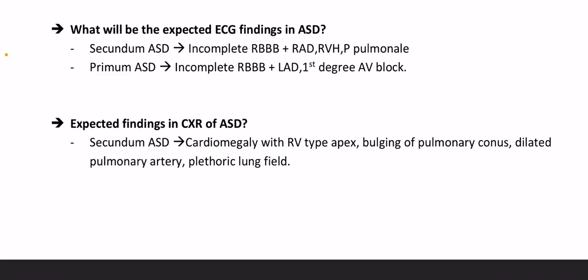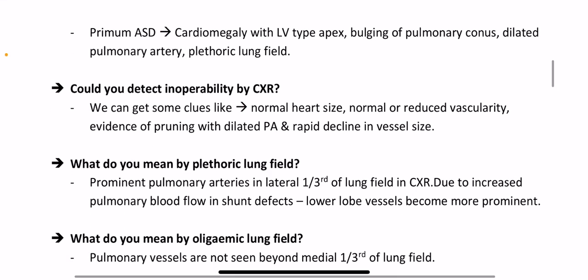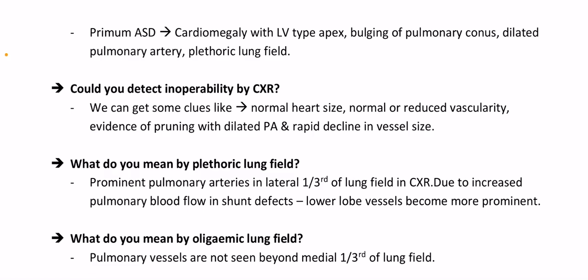Expected findings on chest X-ray in ASD: In secundum ASD — cardiomegaly with RV-type apex, bulging of the pulmonary conus, dilated pulmonary artery, and plethoric lung fields. In primum ASD — cardiomegaly with LV-type apex, bulging of the pulmonary conus, dilated pulmonary artery, and plethoric lung fields.